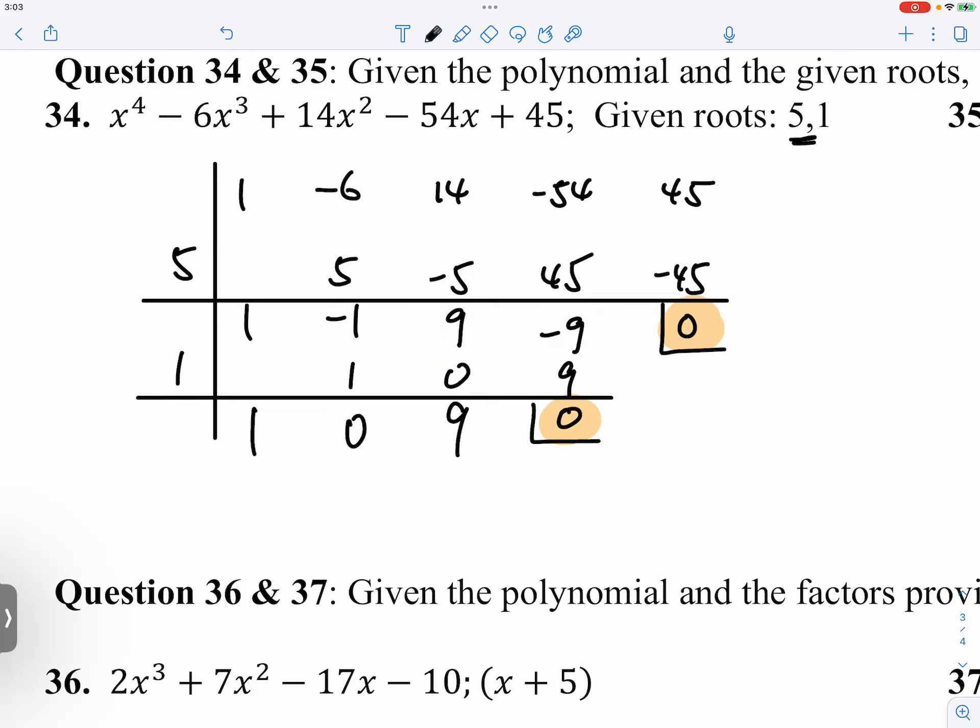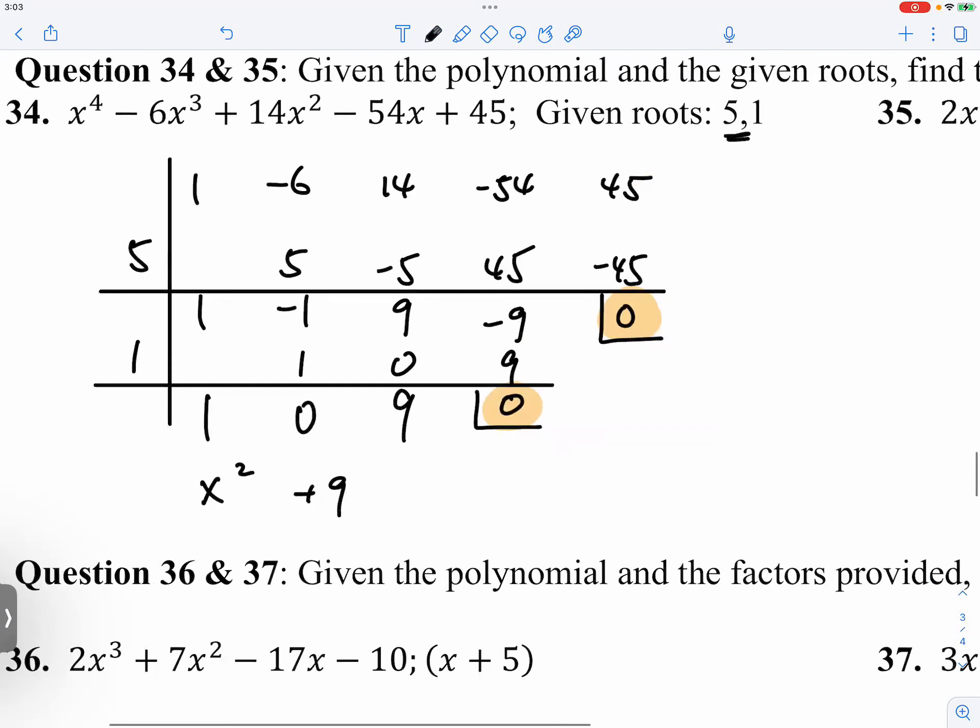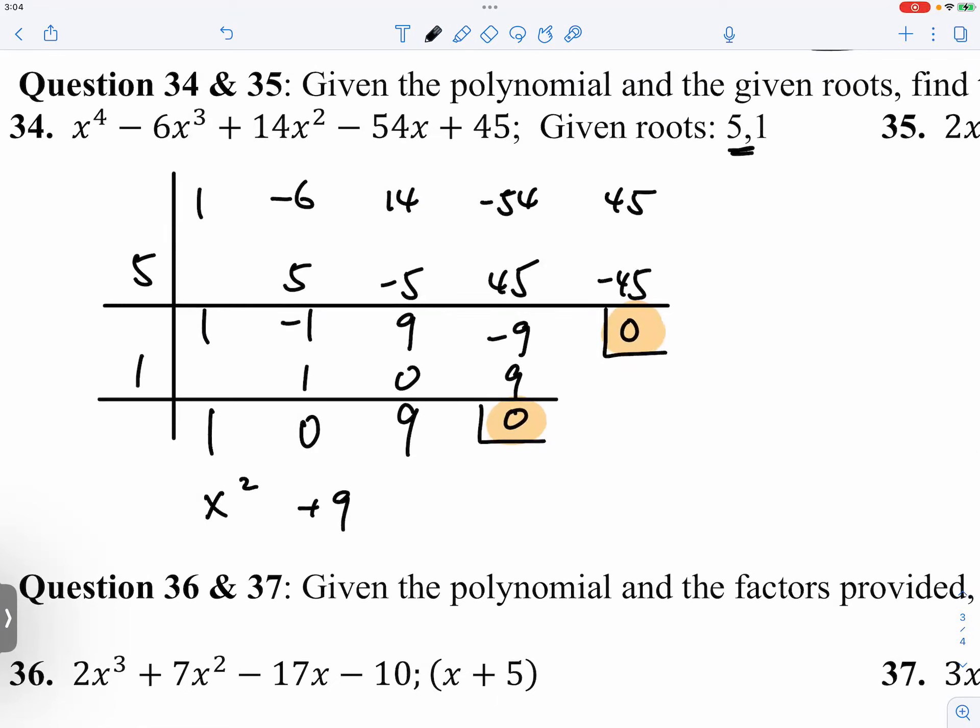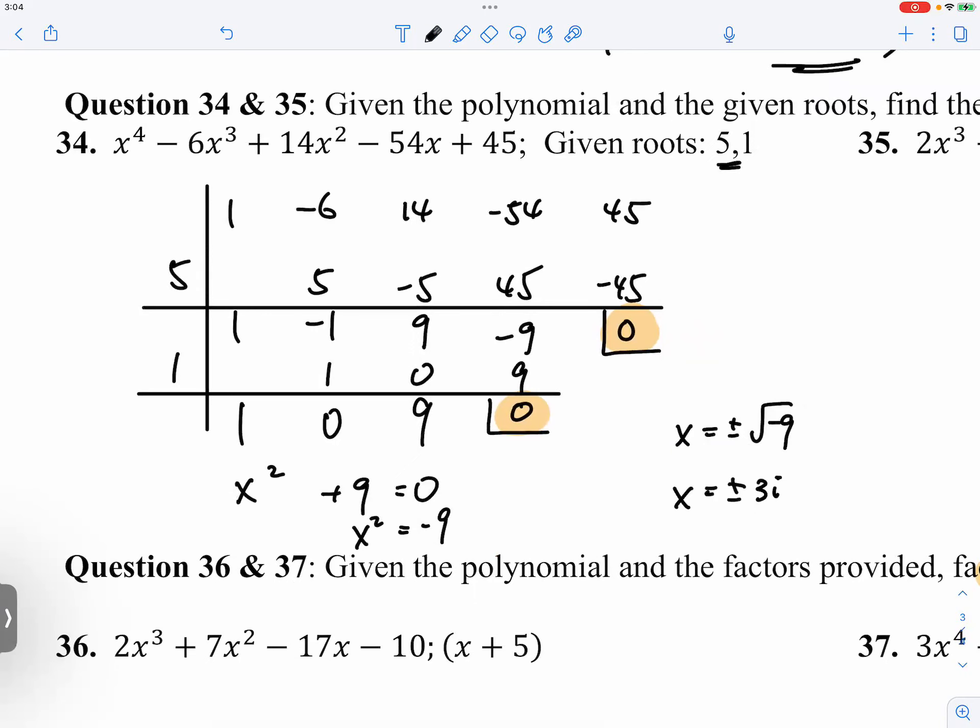So in this case, we have x squared plus 9 as our root. Now if it's x squared plus 9, well, it's not x squared minus 9. I'd be so happy if it's x squared minus 9 because that would be x plus 3 times x minus 3. However, it is x squared equals to 9. So we will just go ahead and move it over. We will set it equal to zero. And unfortunately we will have plus or minus square roots of a negative 9, which becomes plus or minus 3i, because of the negative underneath the square root. That's 34.